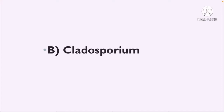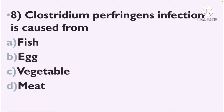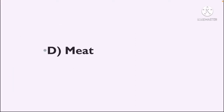Next question: Clostridium perfringens infection is caused from — Option A: Fish, Option B: Egg, Option C: Vegetable, Option D: Meat. The correct answer is Option D, Meat.